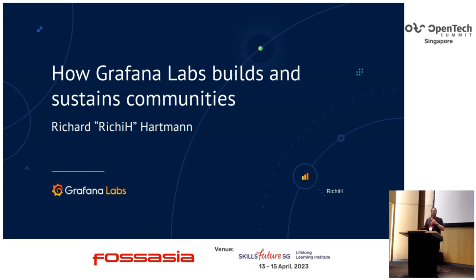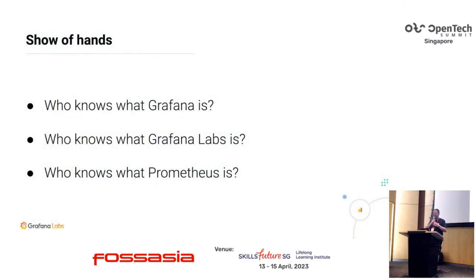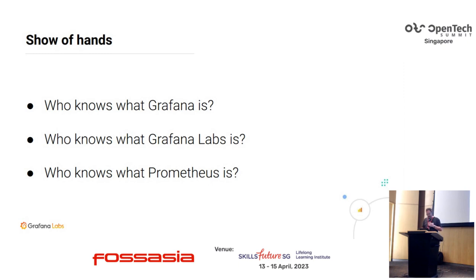Just out of interest — I always do this when I'm in adjacent communities — who knows what Grafana is? That's maybe 30%, which is great because I always like having audiences where people don't really know it. I probably don't have to ask if you know what Grafana Labs is, but do you know what Prometheus is? Anyone? Kubernetes? No surprise. If you're using Kubernetes and you're not using Prometheus, you might want to reconsider. They're literally made for each other and are the two founding projects of CNCF.